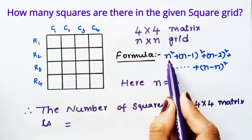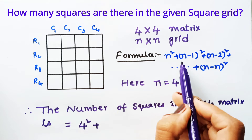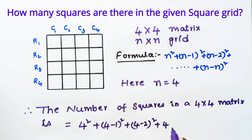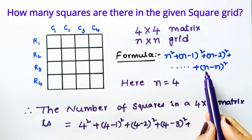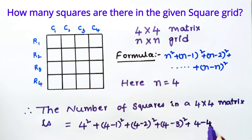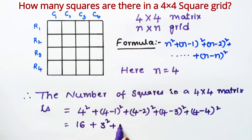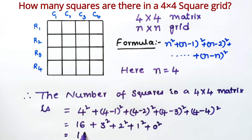Applying the formula: 4² + (4−1)² + (4−2)² + (4−3)² + (4−4)², which equals 16 + 3² + 2² + 1² + 0². That gives us 16 + 9 + 4 + 1 + 0. Adding these: 16 + 9 = 25, 25 + 4 = 29, 29 + 1 = 30.